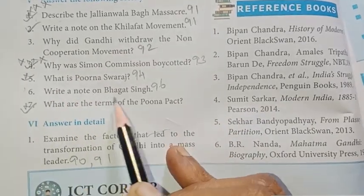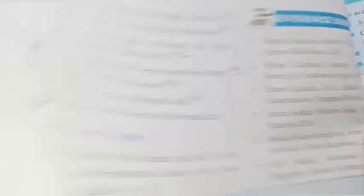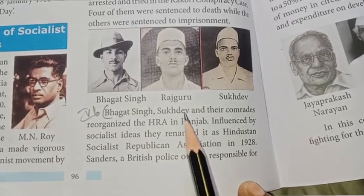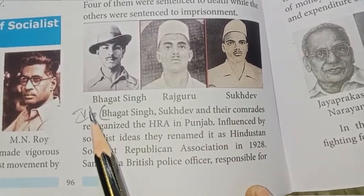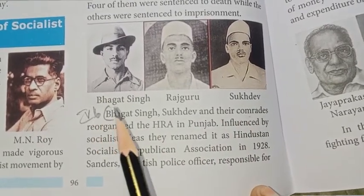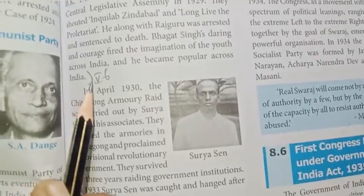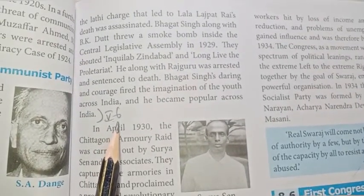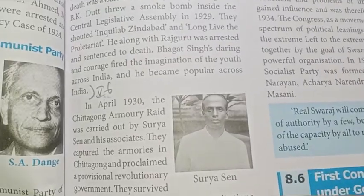Number 6: Write a note on Bhagat Singh — page 96-97. Heading: Bhagat Singh, Sukhdev and their comrades. Start point-wise from page 97. Answer in Roman numeral 5, sixth one.